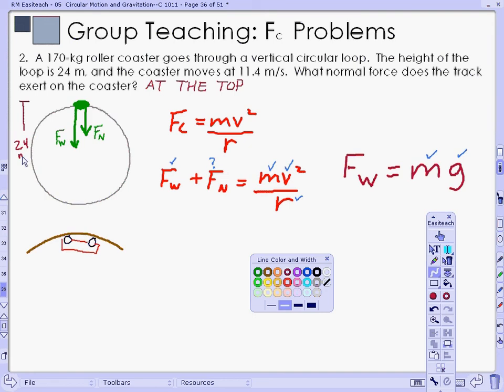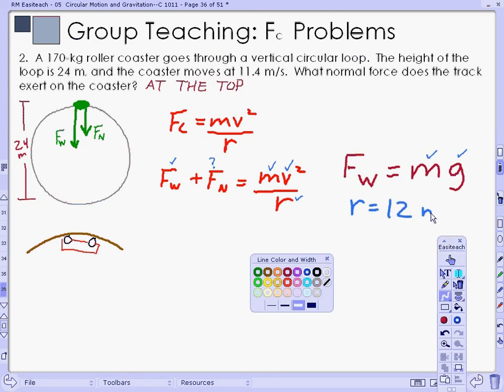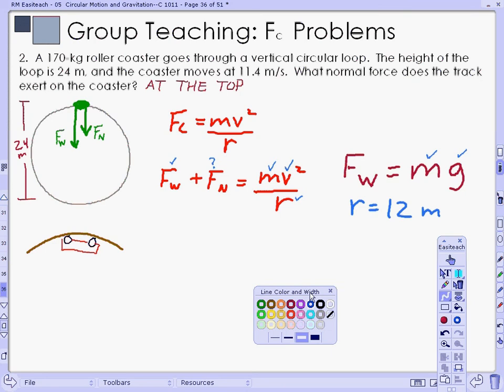So therefore we should make note that the radius is 12 meters in this problem. A little bit tricky, I know, but I'm just trying to make it a little bit realistic. You would measure a circular loop—the height of the loop you would measure is 24 meters.